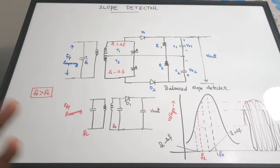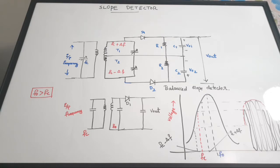In today's video we are going to discuss slope detectors. A slope detector is used for demodulating FM waves — that is, frequency modulated waves. In order to recover our original information signal from the FM wave, we can use the slope detector. We'll understand later why it is called a slope detector, but first let us see the basic principle of what we are performing.